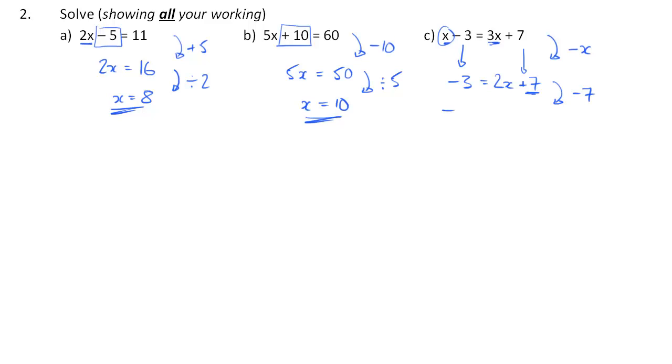-3 take away 7 gets more negative. That's -10. So -10 equals 2x. And finally, divide both sides of my equation by 2, and I get -5 equals x. And there's my solution.